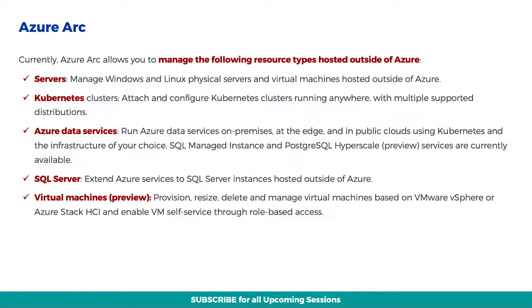Firstly, servers. You can manage Windows and Linux physical servers and virtual machines hosted outside of Azure. Next is Kubernetes clusters. You can attach and configure Kubernetes clusters running anywhere, with multiple supported distributions. Next is Azure Data Services. You can run Azure Data Services on-premises, at the edge, and in public clouds using Kubernetes and the infrastructure of your choice.